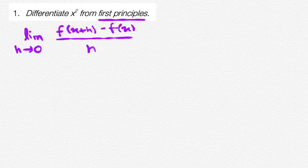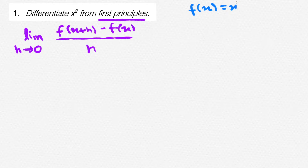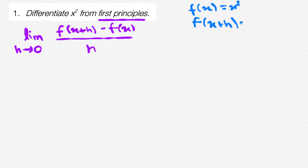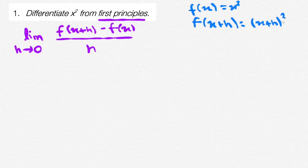In this question, it says to differentiate x squared from first principles. Using our new formula, we shall find out what the differentiation of x squared is. Let's say f of x is equal to x squared. Looking at our formula, we can see we must find out what f of x plus h is. To find f of x plus h, simply sub in x plus h in the value of x. This will give you x plus h, whole squared.